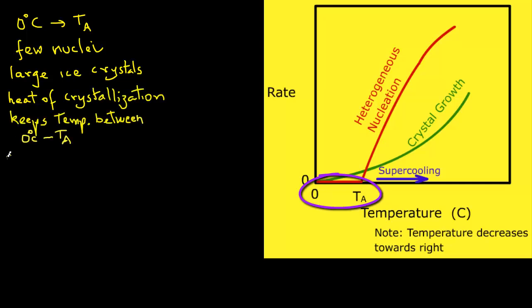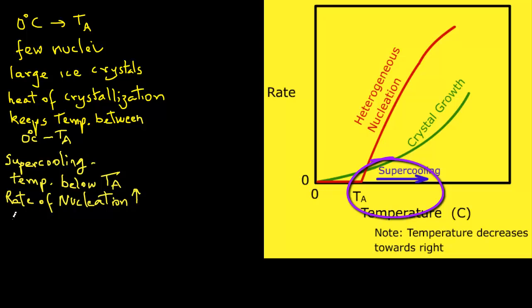On the other hand, with supercooling to temperatures below TA, the rate of nucleation will be high as seen from the rising curve of nucleation which is shown in red. This will result in the formation of numerous nuclei.